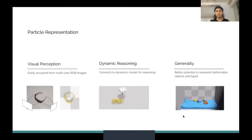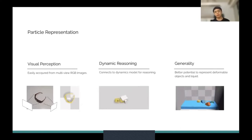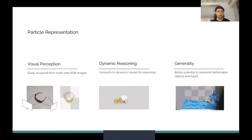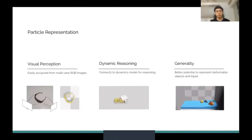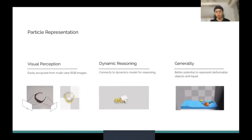Given all those advantages, people may ask: the particle representation is so powerful and not new — why couldn't people do it in the past, and why can we do it now? The answer is that nowadays we can afford much more computing power. With largely increased computing power, we can afford to compute on the particle representation, which leads to many benefits for robot manipulation tasks.